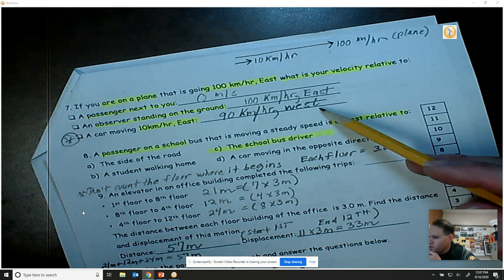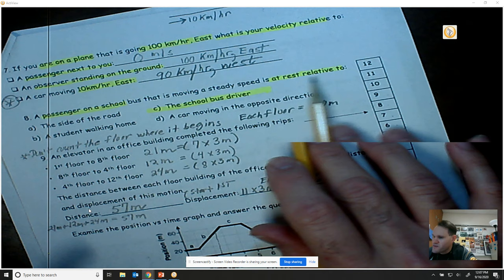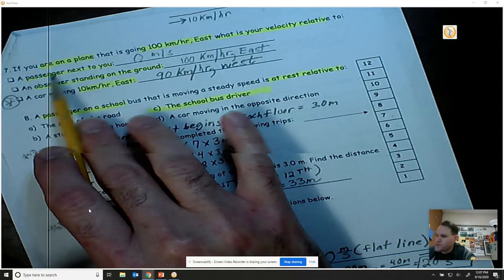All right. Number eight. A passenger on a school bus that is moving at steady speed is at rest relative to a school bus driver. Again, this is the same thing as the passenger on a plane that you're already on. Same idea. At rest.